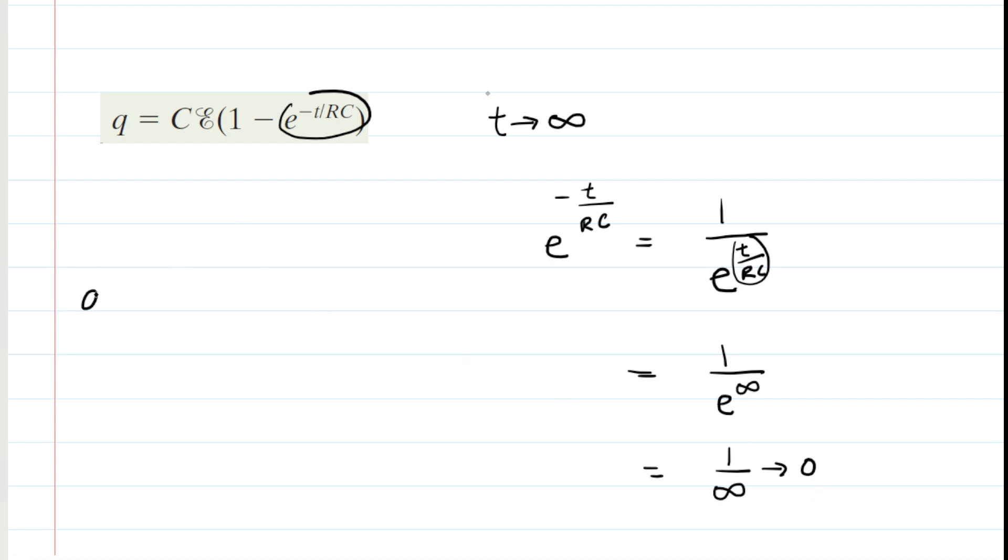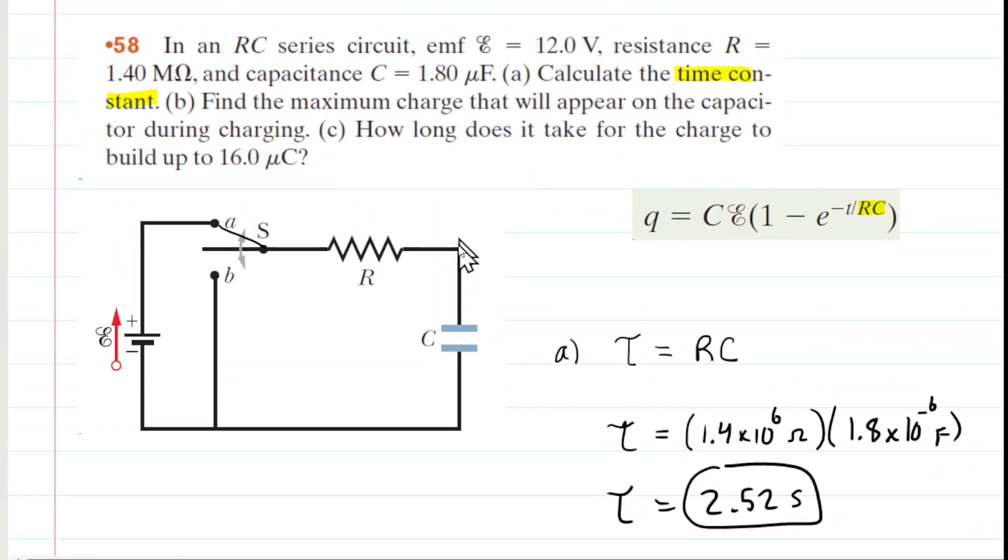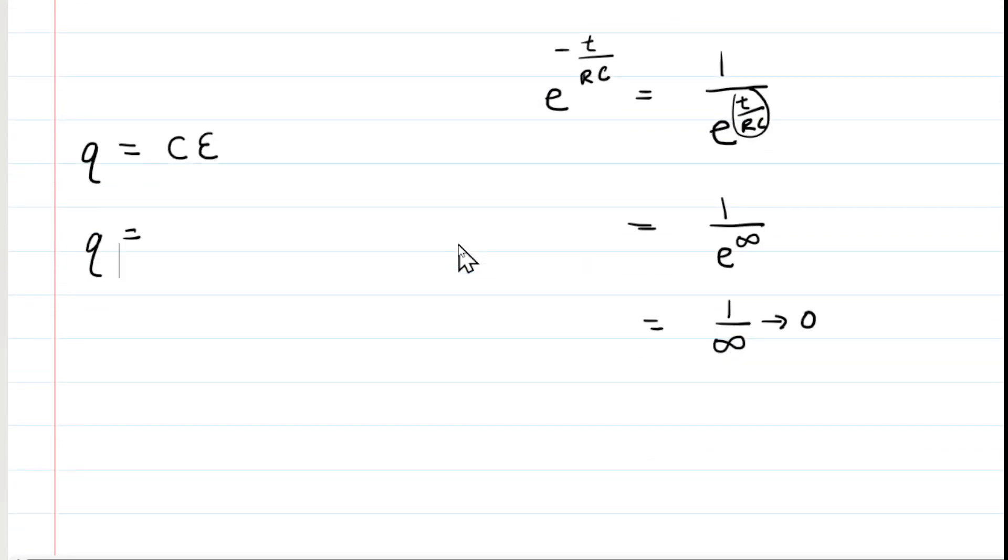So long story short, if we're going to let time approach infinity, then that exponential term becomes 0. So now we have capacitance times the potential difference provided by the battery, and then multiplied by 1 minus 0. But of course in the parentheses, that just simplifies to a 1. So that would be how we calculate the maximum amount of charge. We're going to go ahead and plug in the capacitance in its standard unit form, and then the potential difference provided by the battery was 12 volts.